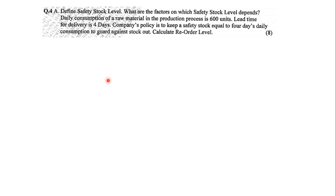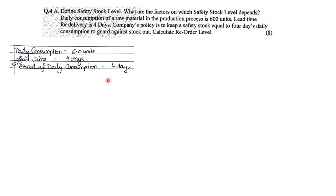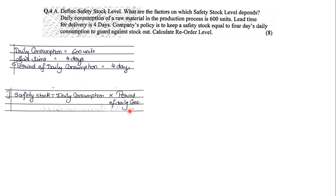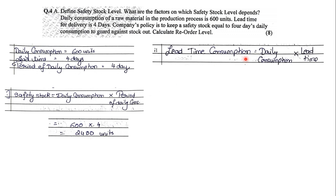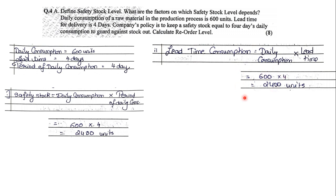First, we note down the data: Daily Consumption = 600 units, Lead Time = 4 days, Period for Daily Consumption = 4 days. Step 1 — Safety Stock = Daily Consumption × Period of Daily Consumption = 600 × 4 = 2,400 units. Step 2 — Lead Time Consumption = Daily Consumption × Lead Time = 600 × 4 = 2,400 units.